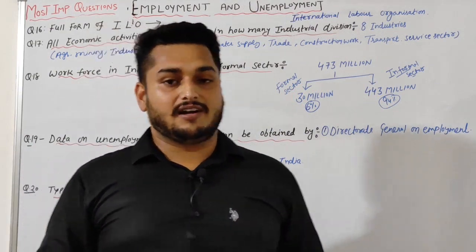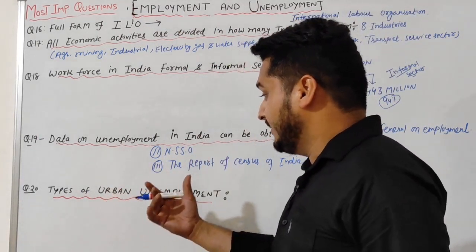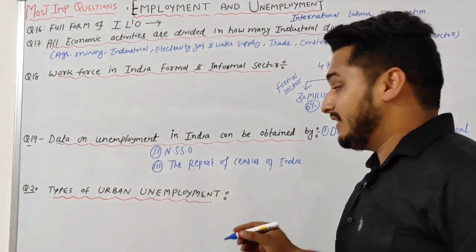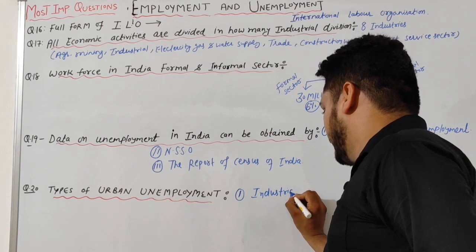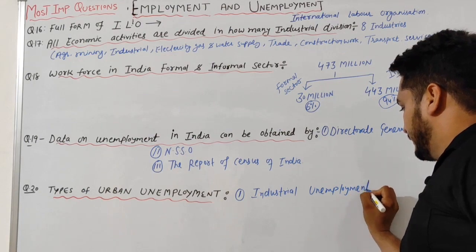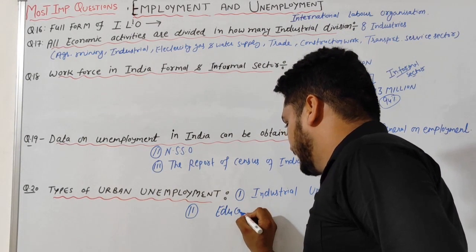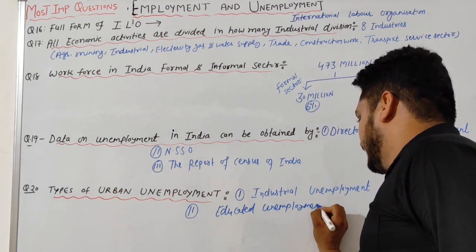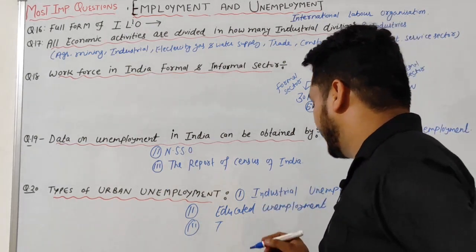Question 20: Types of urban unemployment. There are generally three types of urban unemployment: first, industrial unemployment; second, educated unemployment; and third, technical unemployment.